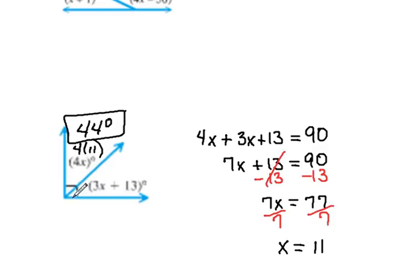For the second angle we would do the same thing. We would have to replace the x with 11. So 3 times 11 would be 33 plus 13, which would be 46. So our other angle would have to be 46 degrees.